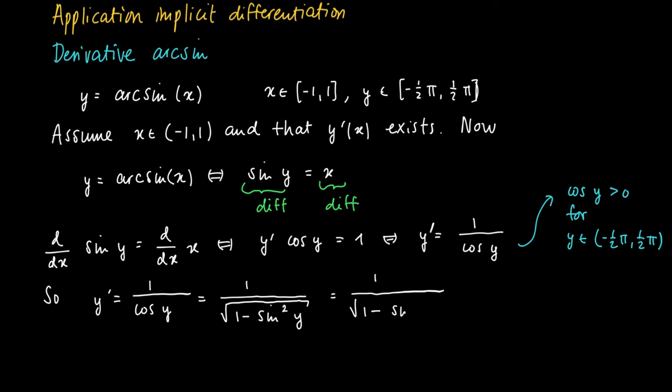Now we plug in, substitute the value for y, since y equals arcsine of x. We get under the root the square root of 1 minus the sine of arcsine squared. We know that the sine and arcsine are inverse functions, so what remains is just x.